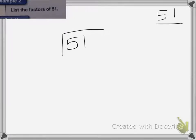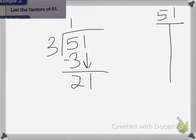So I'm going to try 3. So 3 goes into 5 once, that's 3, subtract 2, bring down the 1, 3 goes into 21, 7 times. So I know that I have 1 and 51 as factors, and 3 and 17.